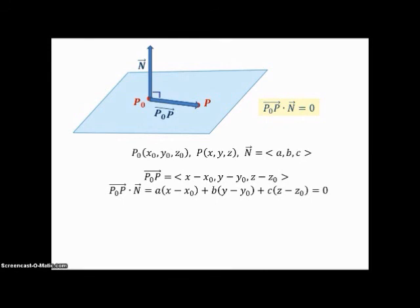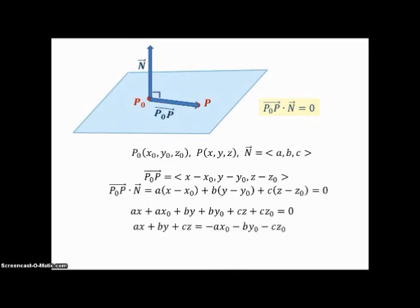We call n a normal to the plane. With P₀ = ⟨x₀, y₀, z₀⟩, P = ⟨x, y, z⟩, and n = ⟨a, b, c⟩, the vector P₀P is ⟨x − x₀, y − y₀, z − z₀⟩. Dotting that with n and setting it equal to 0, then multiplying out and moving the constants to the other side, we arrive at our familiar equation of a plane, developed using vectors.